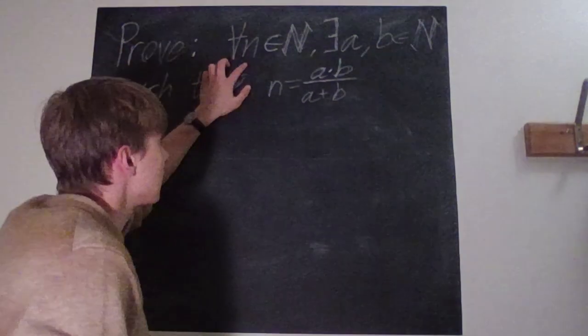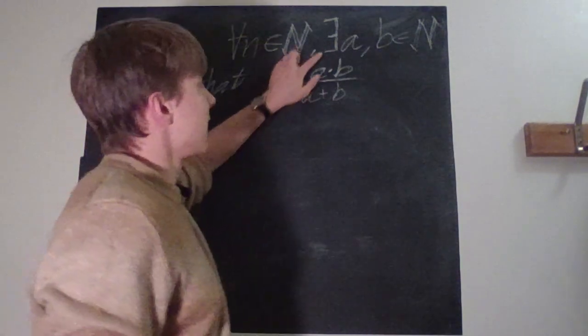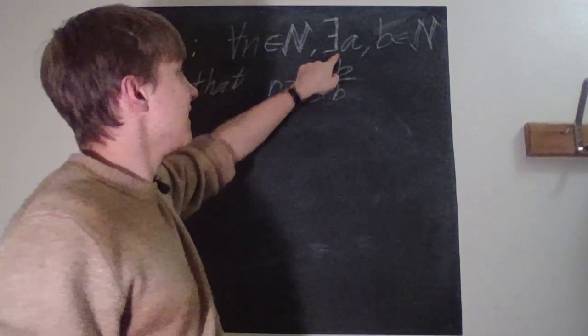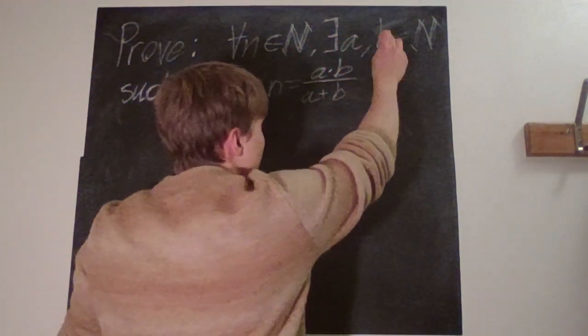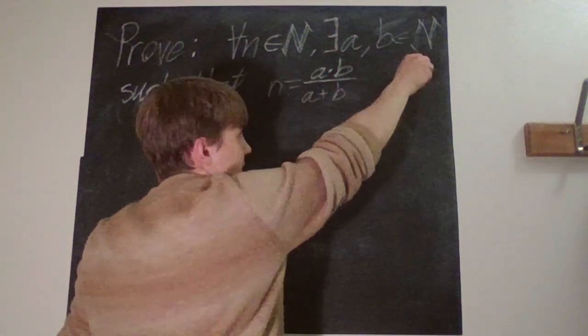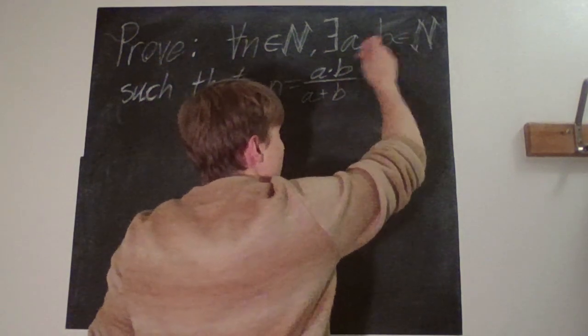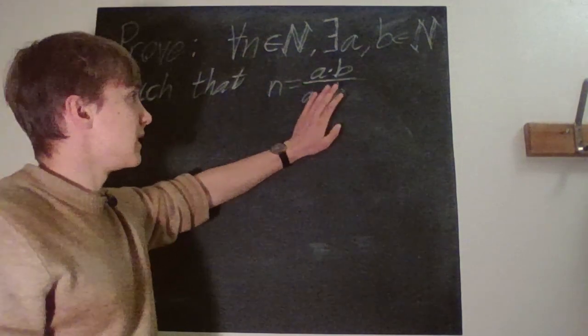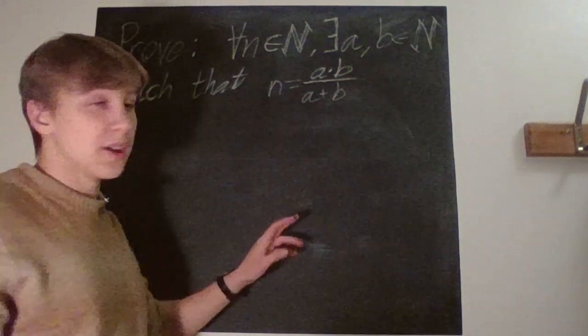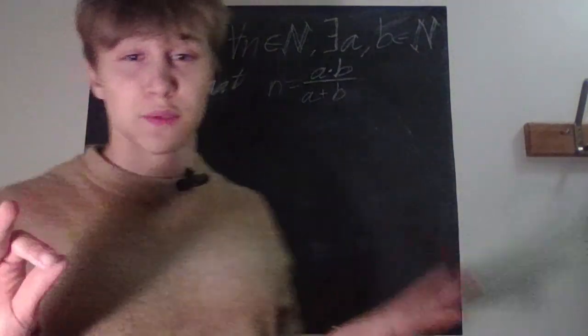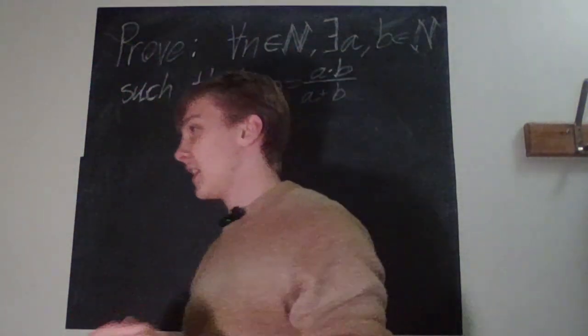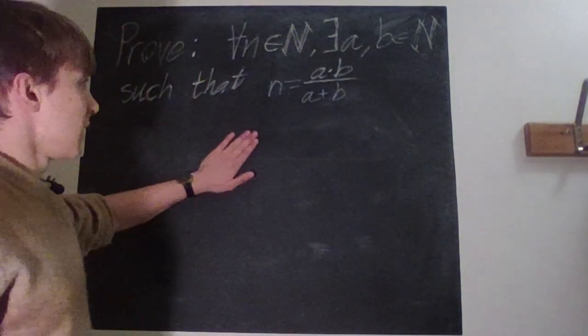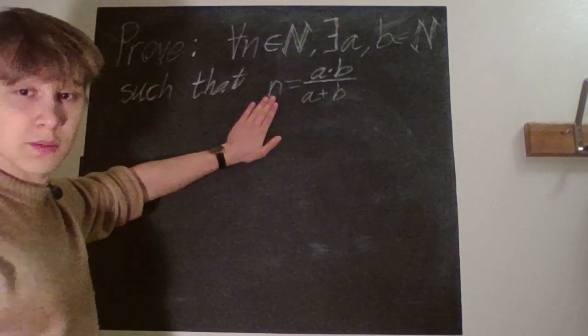There exists, this backwards E, there exists a pair of natural integers a and b such that n is equal to ab over a plus b.